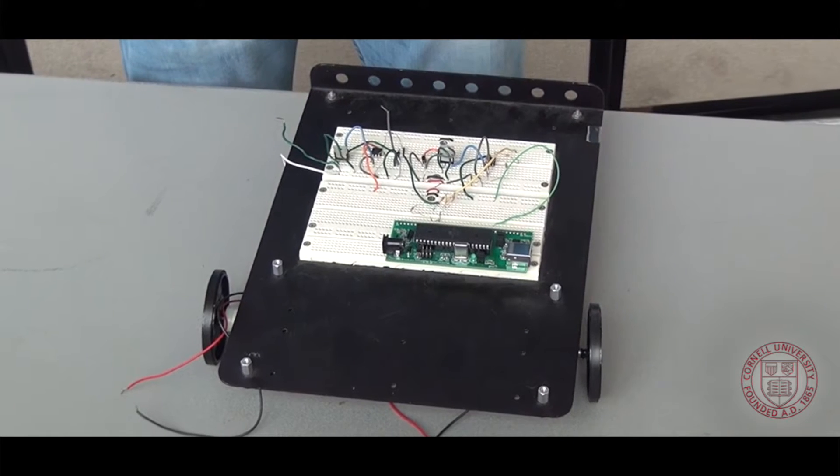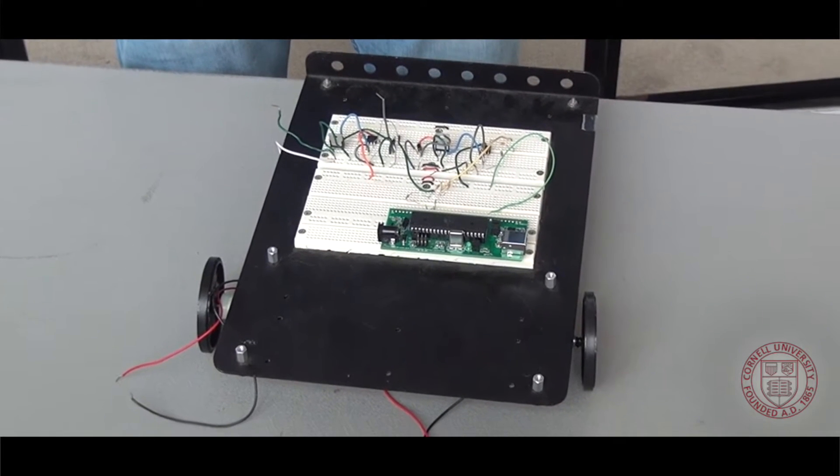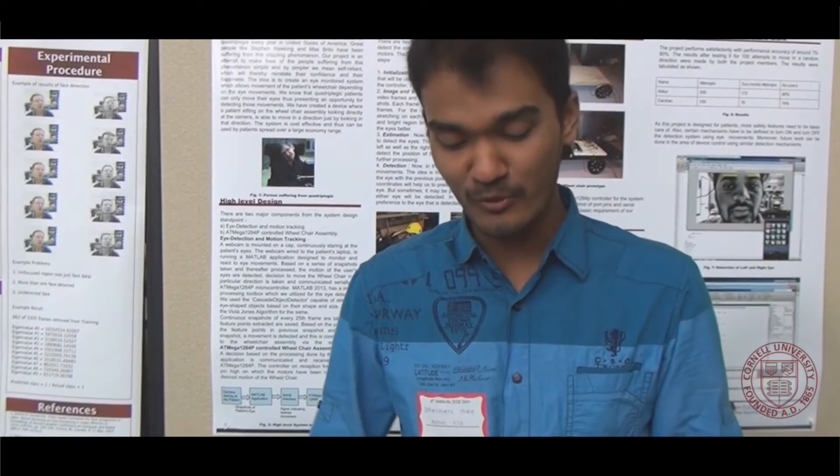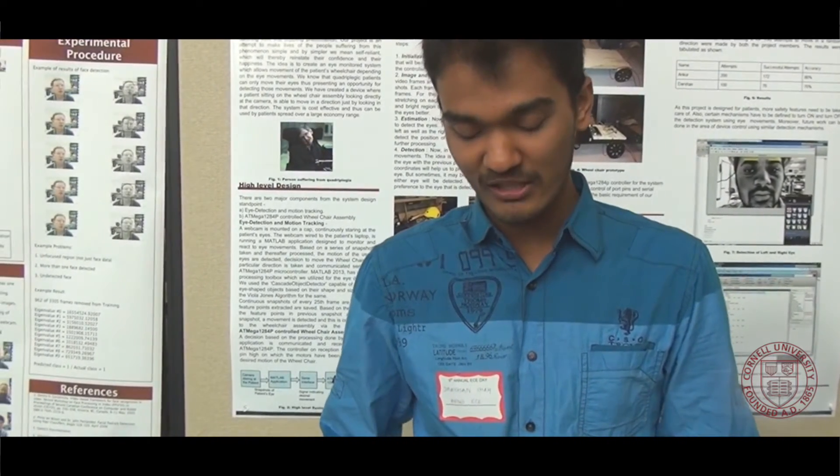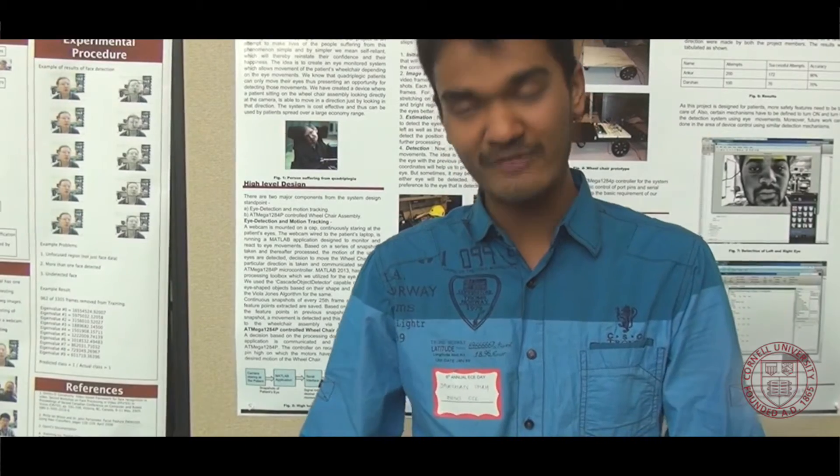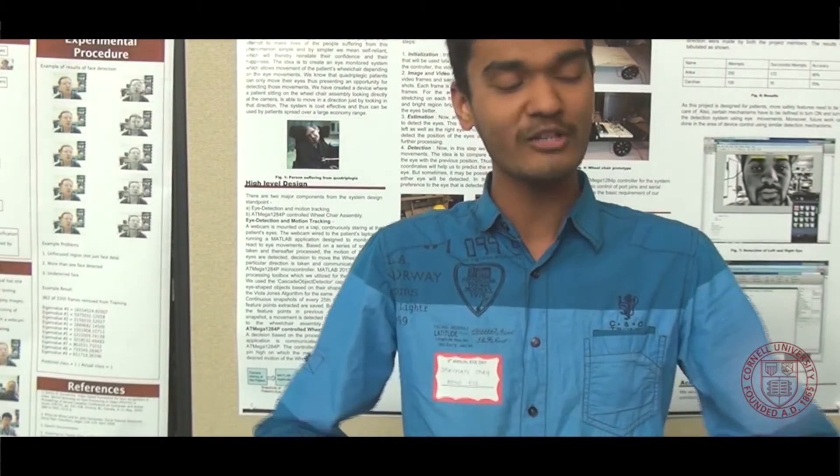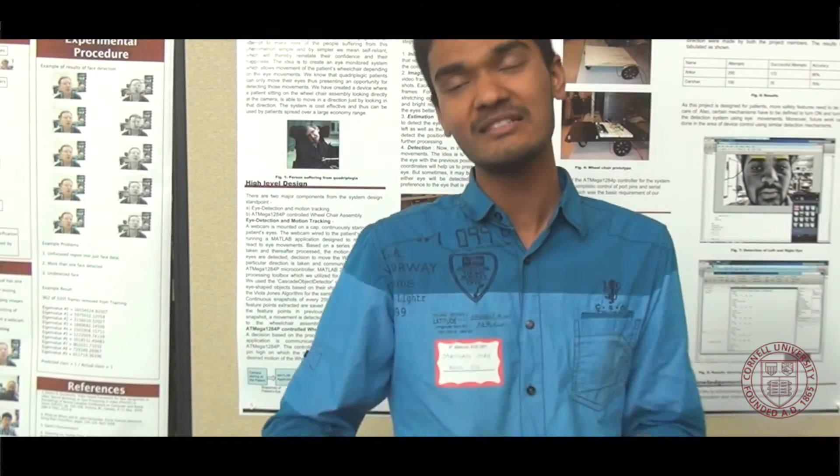This is the hardware part of the wheelchair prototype, where the command to move right or left will be given to this wheelchair through the Matlab application and the serial communication. So the basic idea of this is the prototype for the wheelchair, and it will move towards right, left, or move straight according to the signals that we receive from Matlab.